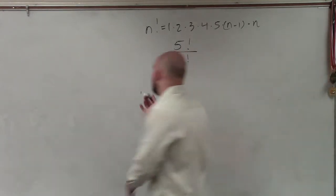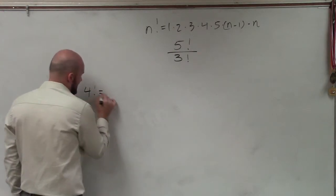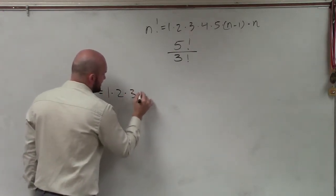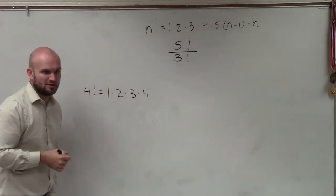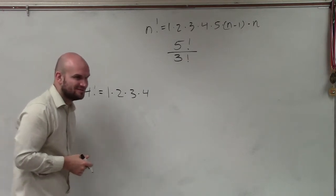So let's look at an example. 4 factorial equals 1 times 2 times 3 times 4. Does that make a little bit more sense rather than with the variables? Yeah.